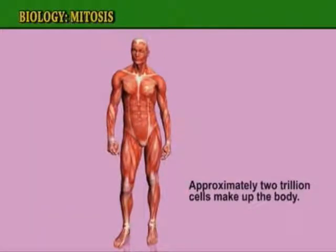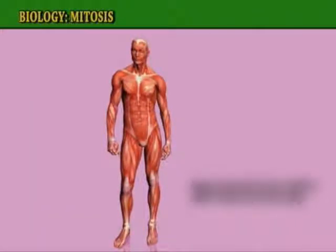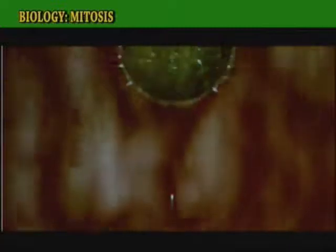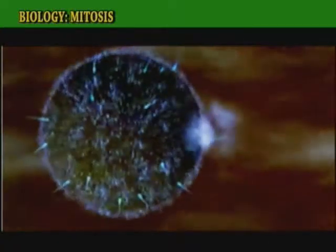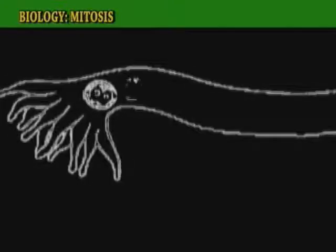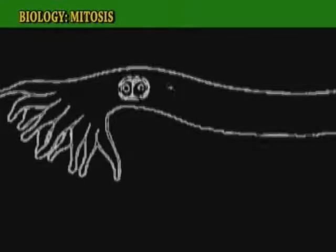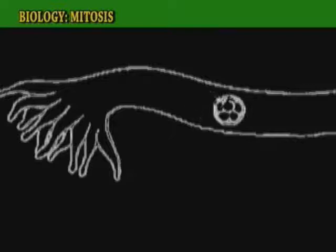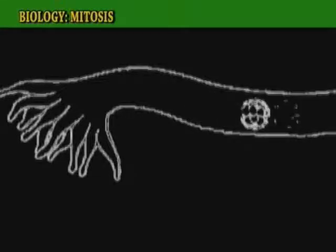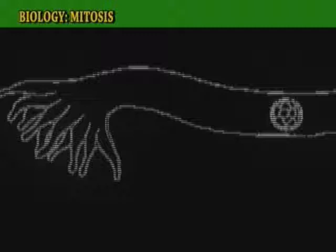Approximately 2 trillion cells make up the body. All of these cells are derived from a single cell at the start of your life as a fertilized egg. In each successful cell division, genetic material is equally partitioned between the resulting two cells. The offspring are therefore genetically identical to each other and to their parent. In other words, they are clones.